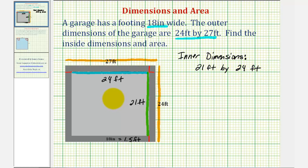Now we also want to find the inner area, and since we have a rectangle, to find the area, we'll multiply the length and the width. So the area would be equal to 21 feet times 24 feet.